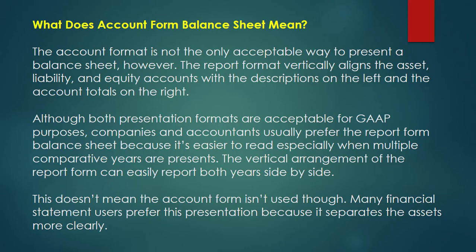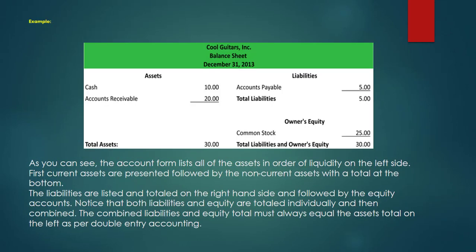So if we look at an actual example it will be much clearer. Here you can see the example. On the left side the assets are listed, and on the right side the liabilities and owner's equity are listed. We first write the current assets, then the fixed assets, then we make a total asset.